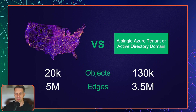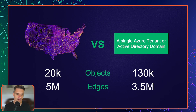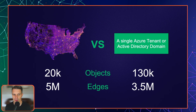Those objects are connected by about 3.5 million edges or roads — specifically privileges or configurations that allow us to get from object to object.